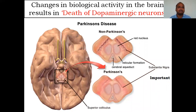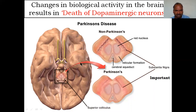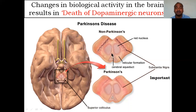There are changes in biological activity in the brain. The problem is in the brain, specifically in the substantia nigra — this is very, very important. Here you can see a diagram: this structure is called the substantia nigra. In a normal person, dopaminergic neurons are present in the substantia nigra.